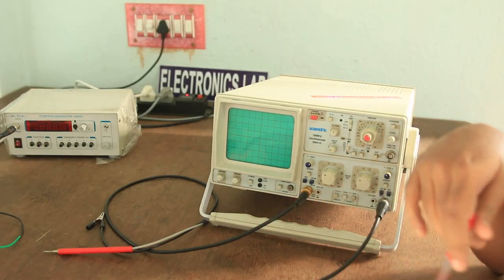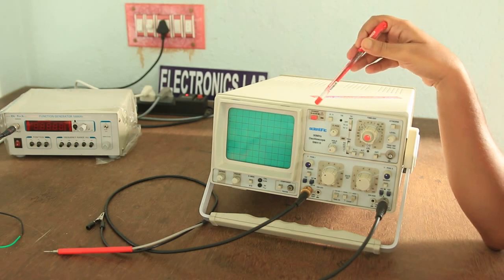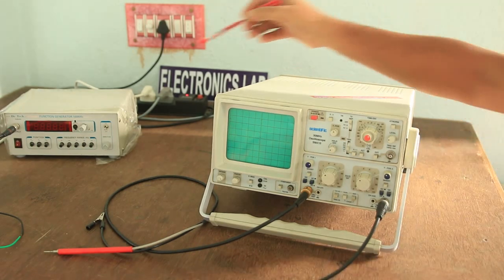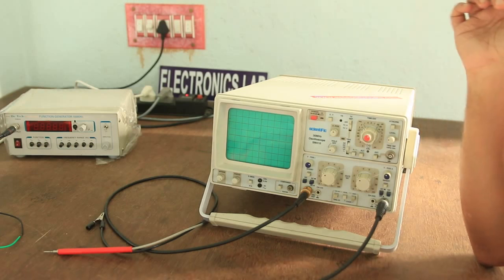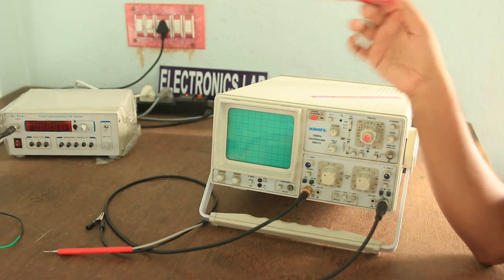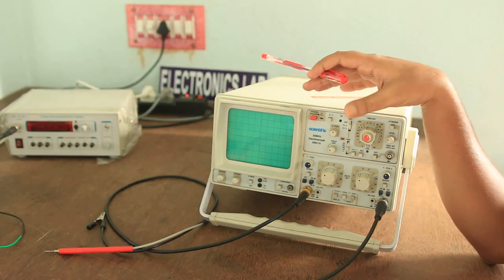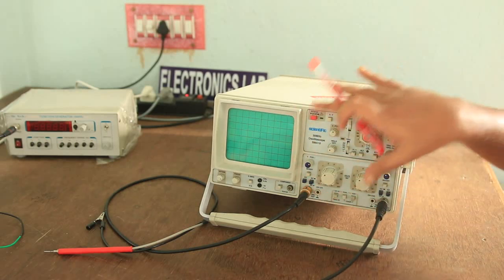Today we will discuss something we call cathode ray oscilloscope or CRO. This is an analog CRO. As you can see, there is another instrument which we call functional generator, and we will use that later on to describe the working principle of CRO. There are lots of knobs in CRO.